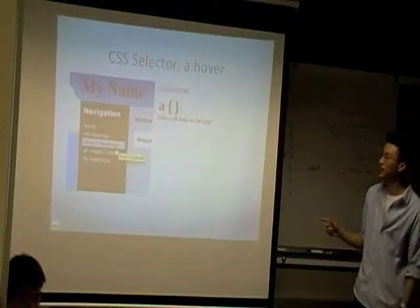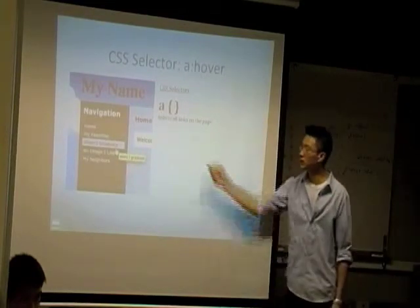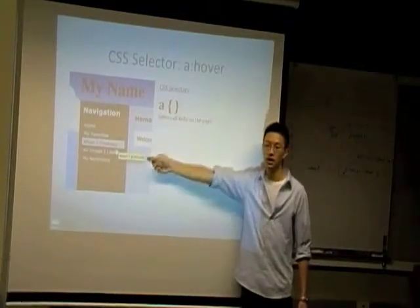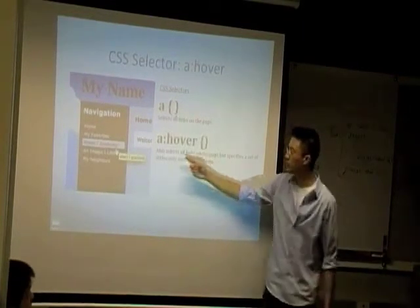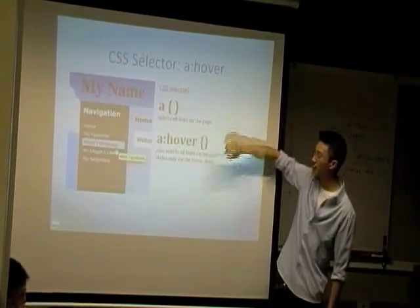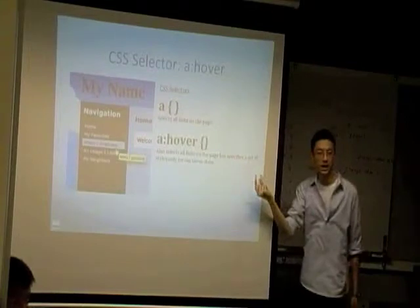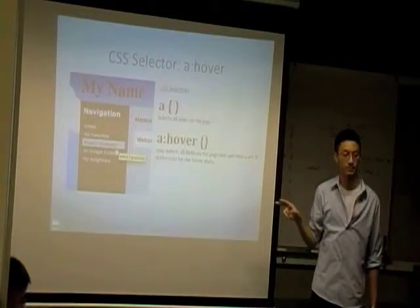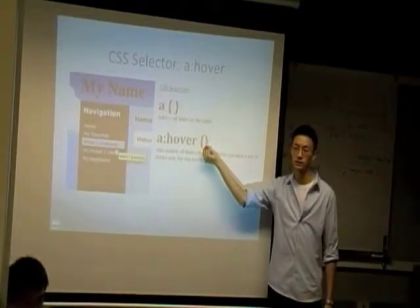The last thing we're going to go over before we get into the main topic today is the hover selector. We've already seen the anchor selector - this 'A' - which selects all the links in our webpage. If we do 'A colon hover,' it does the same thing, selecting all our links, except that the attributes within this selector only apply when the hover state is active - meaning when we are actually mousing over that link element. So unless you mouse over the element, whatever is within this isn't going to affect your document.